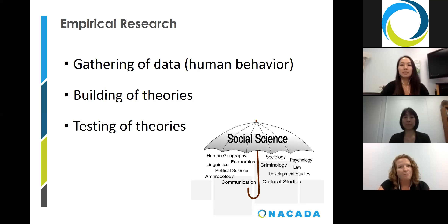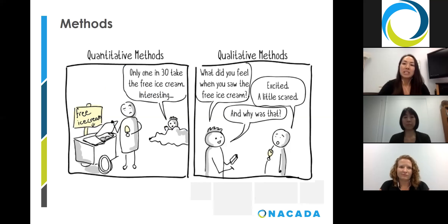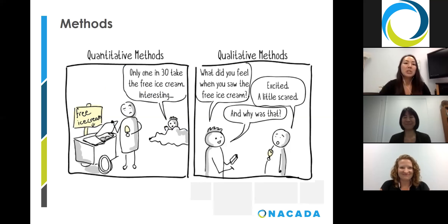Social sciences research includes the use of both qualitative and quantitative research methods. The questions that come from qualitative methods would be those like, what did you feel when you saw this free ice cream? Excited? A little scared? And why was that? Whereas in contrast, quantitative research refers to counts and measures of things — for example, only one in 30 took the free ice cream. Utilization of one or both types of research methods depends on various factors, including the researcher's beliefs, the nature of knowledge and how it can be acquired, the purposes and goals of the research, and the research participants.